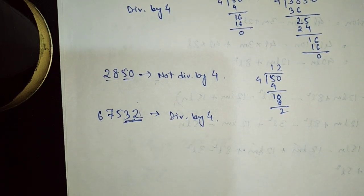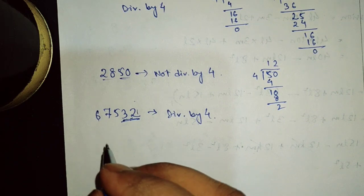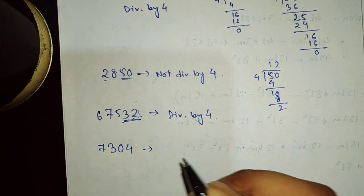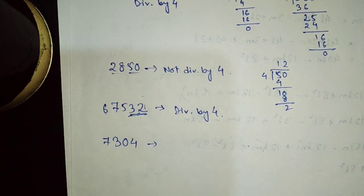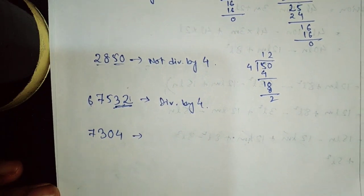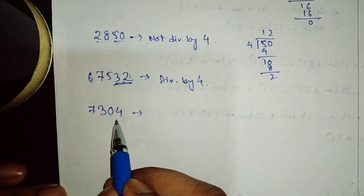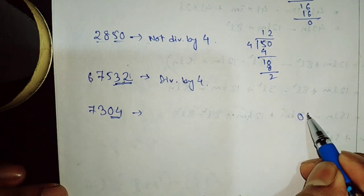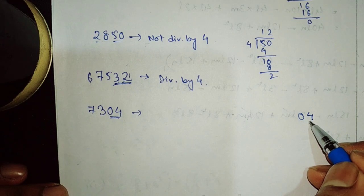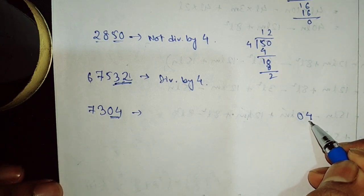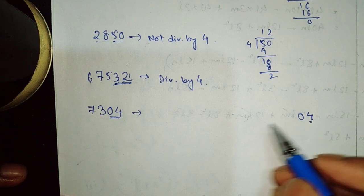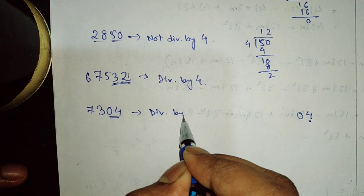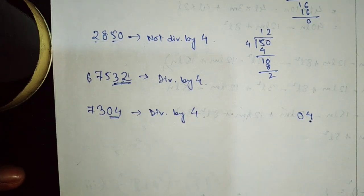Let's take another example: 7304. In this number, the number formed by the last two digits is 04, which is nothing but 4. And 4 is divisible by 4. So 7304 is divisible by 4 — the answer will be yes.